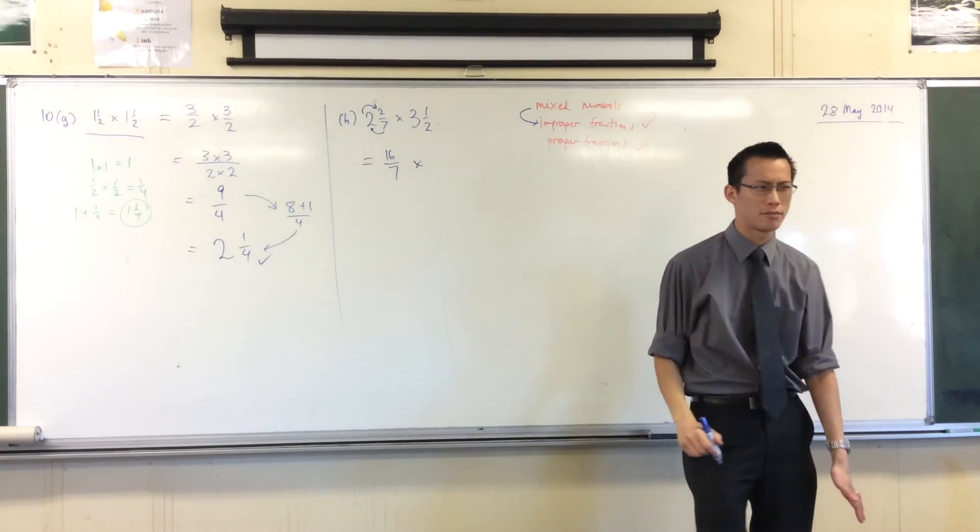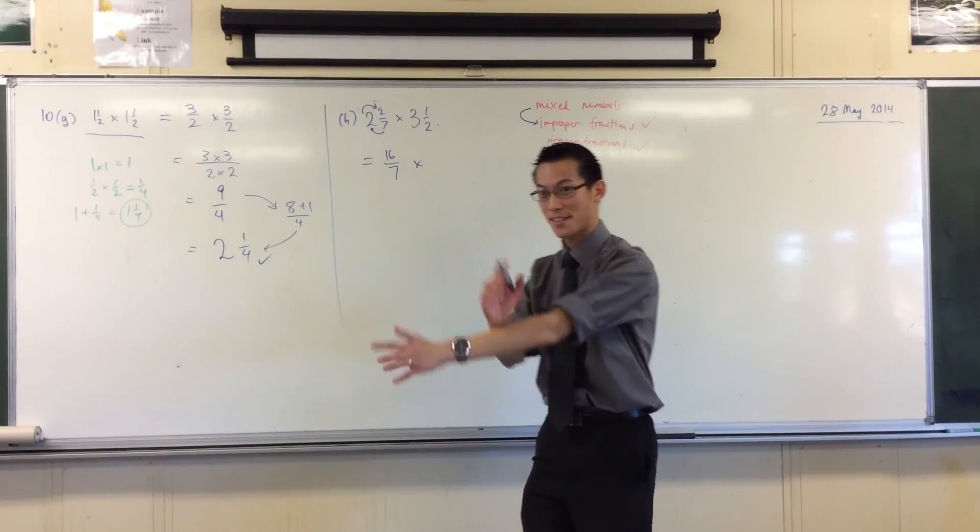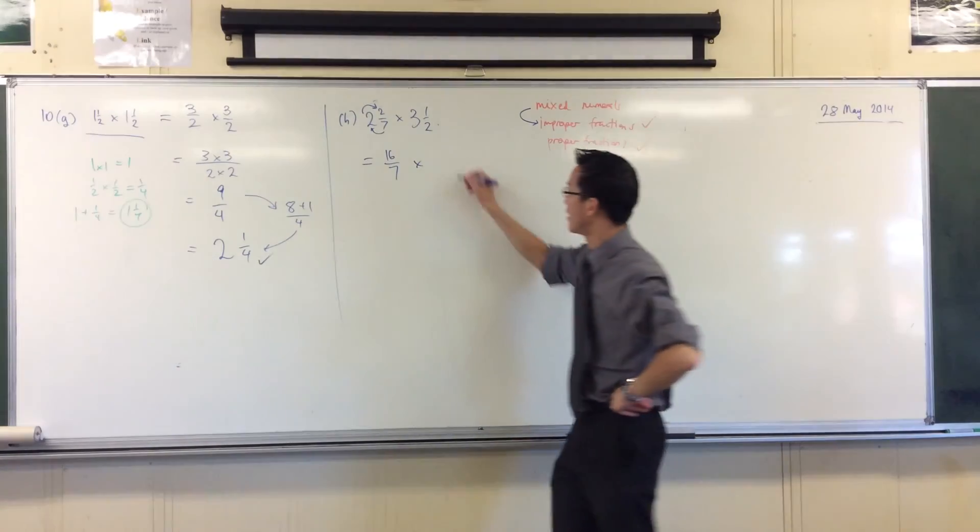3 and a half. Oh, improper fraction. Who could do it? Yeah, do you want me to do it? 7 over 2. Well done. We're doing well.